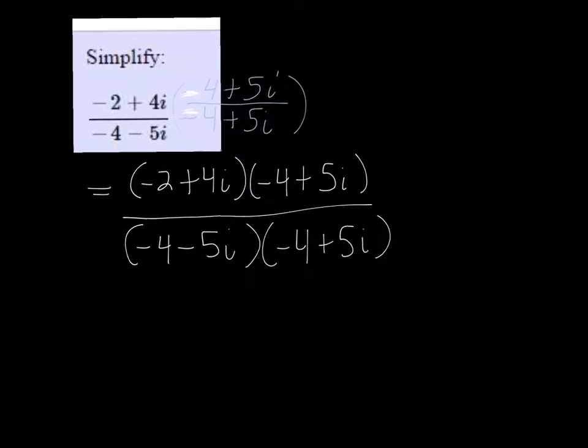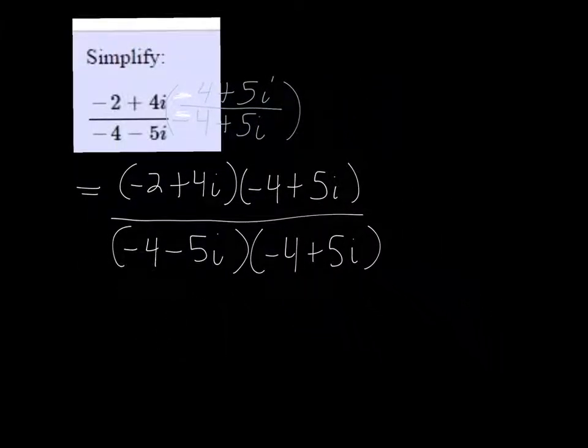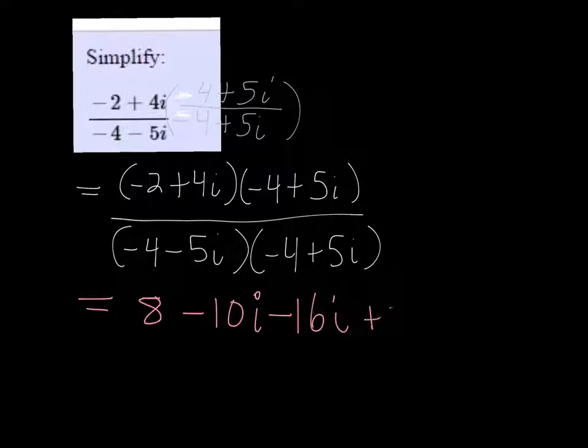So if we start multiplying here, the top we're going to get positive 8, and minus 10i, minus 16i, and plus 20i squared.